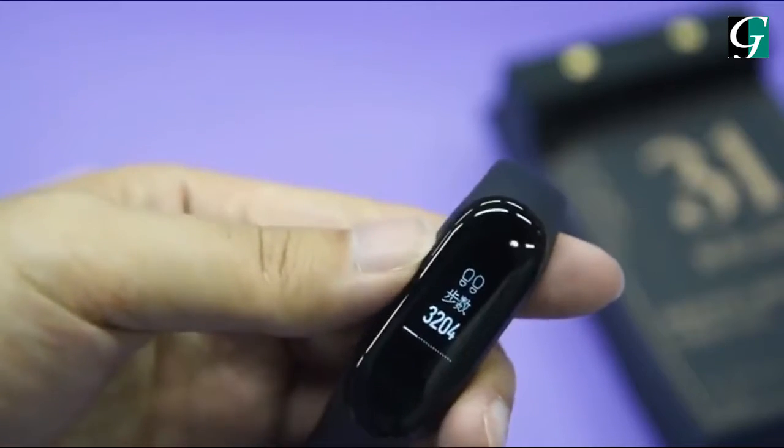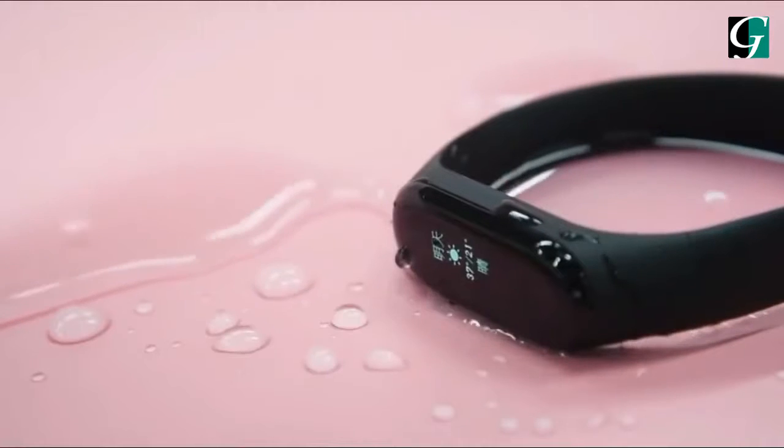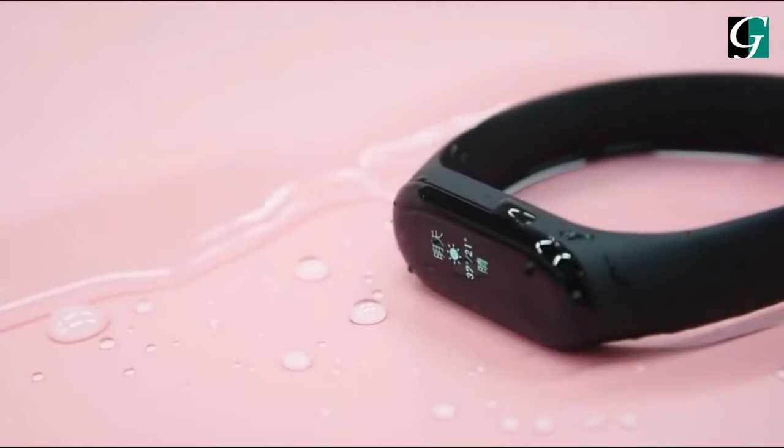The Mi Band 3 comes with water and dust resistance and is completely waterproof for up to 50 meters, ensuring that it works perfectly even when the user is swimming.